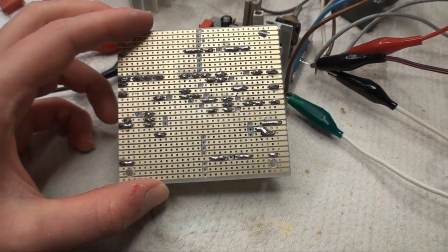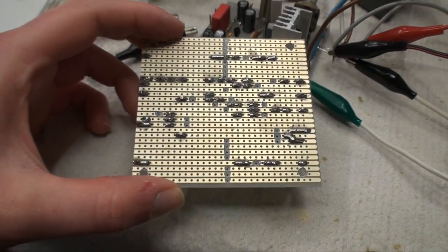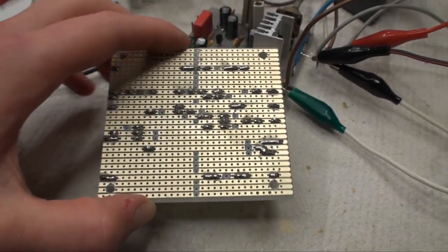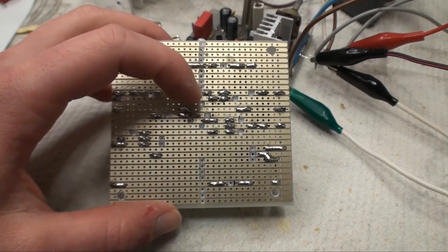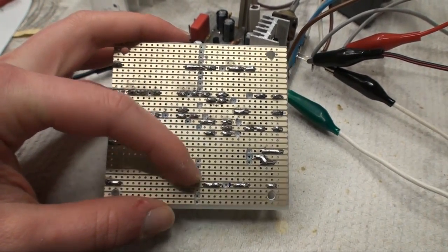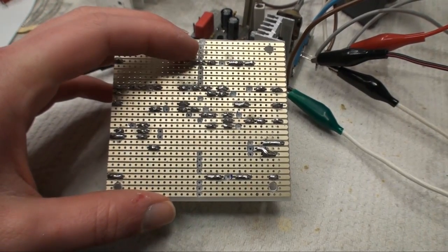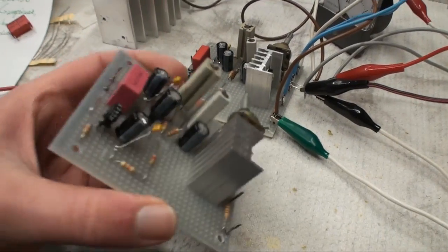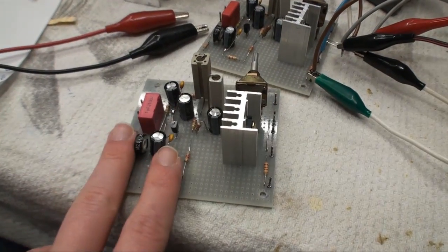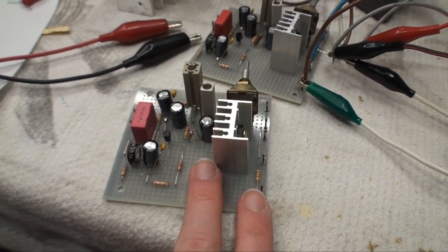What I did was I went ahead and broke a lot more traces than I originally had broken, so you can see basically we have this line going all the way through on all the traces that are used, so that we basically separate the input side from the output side.